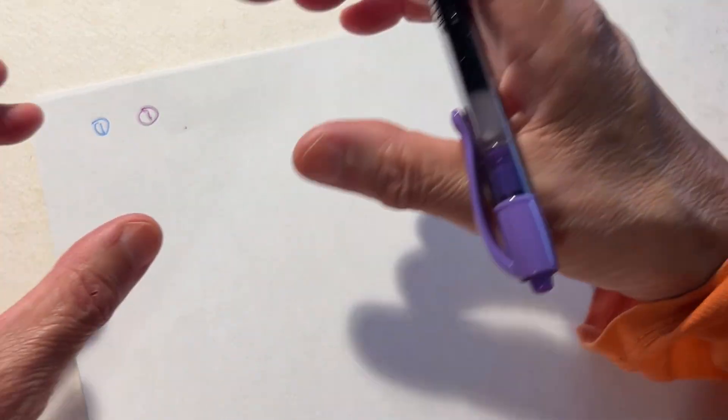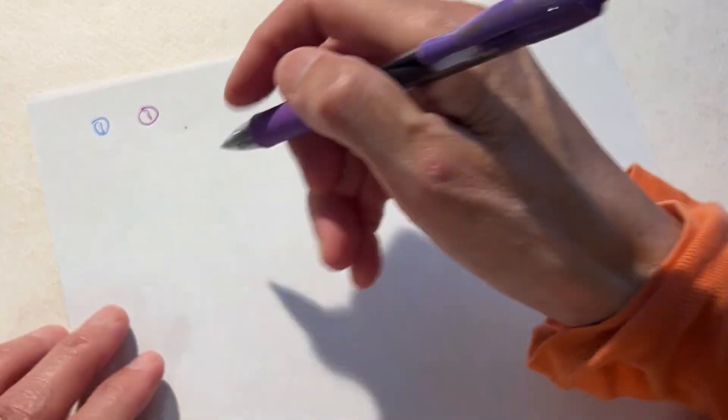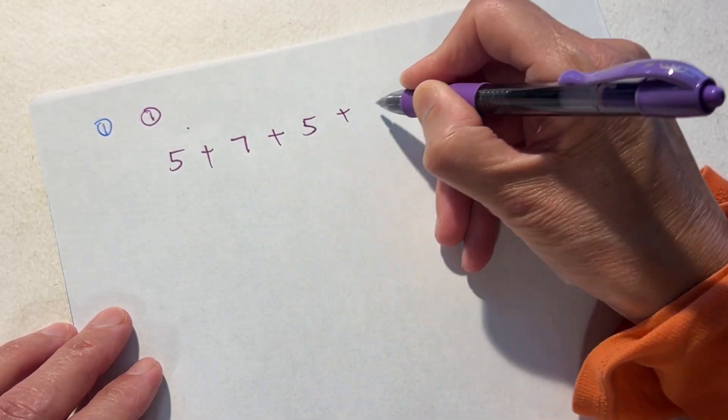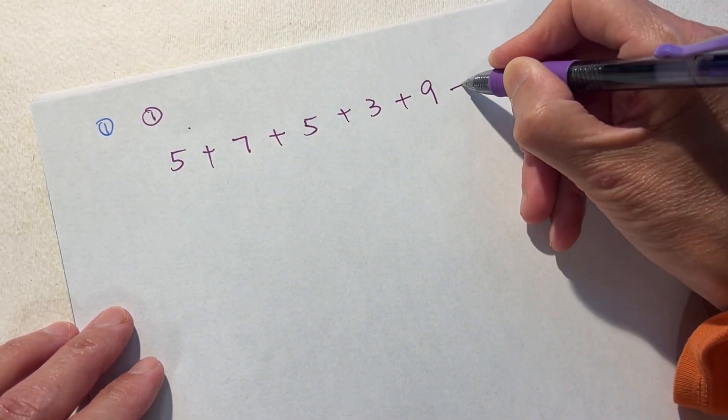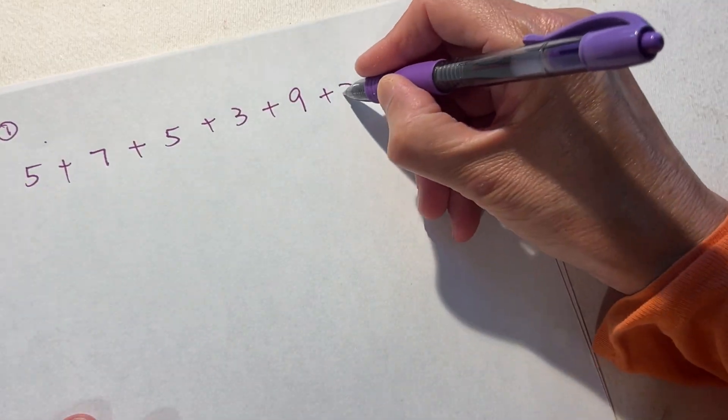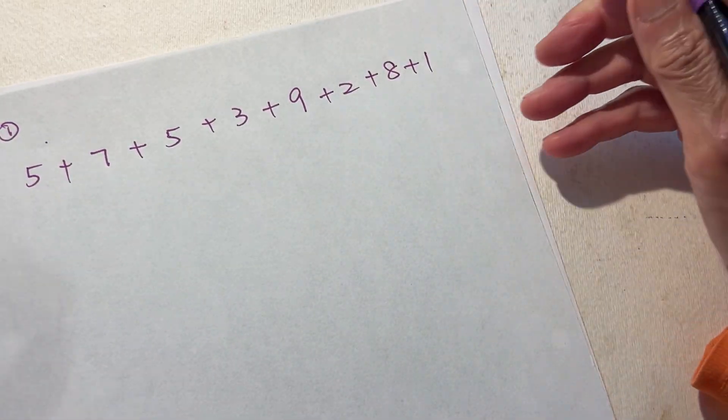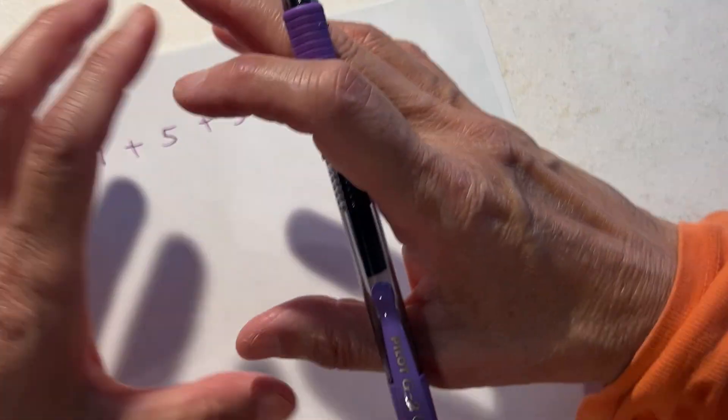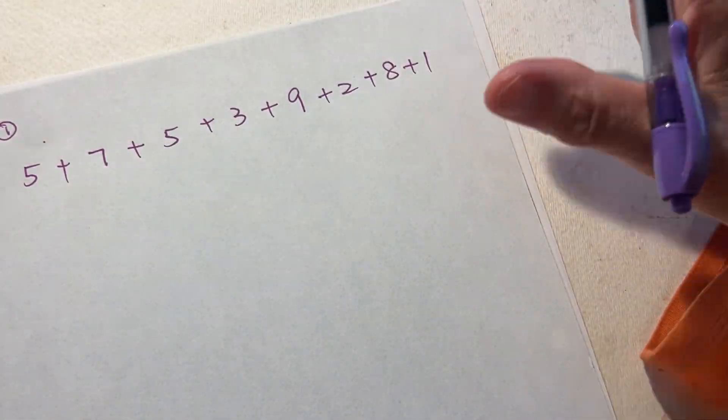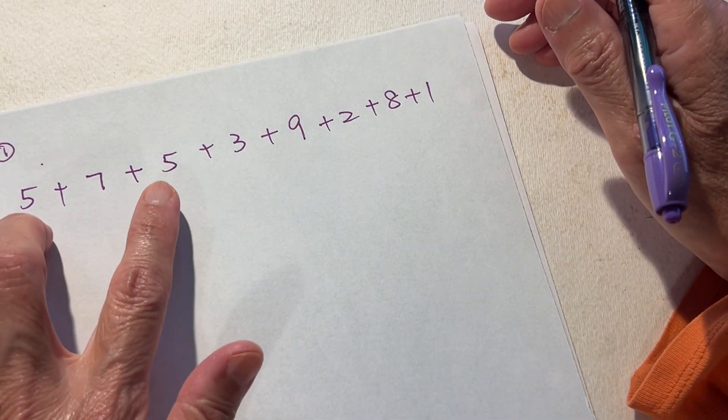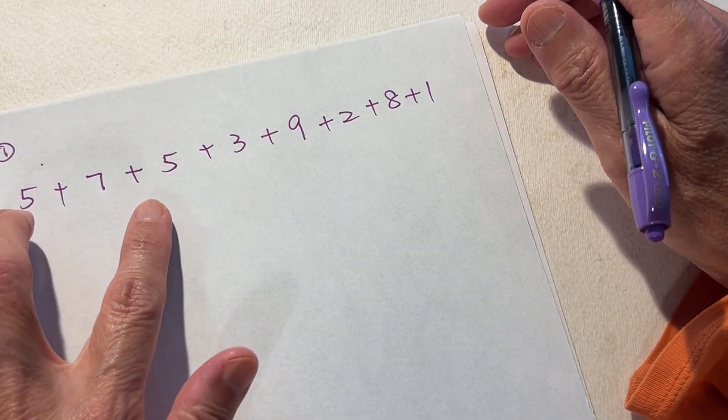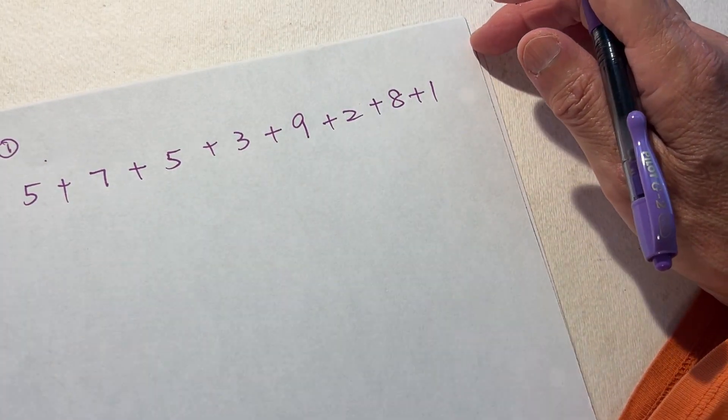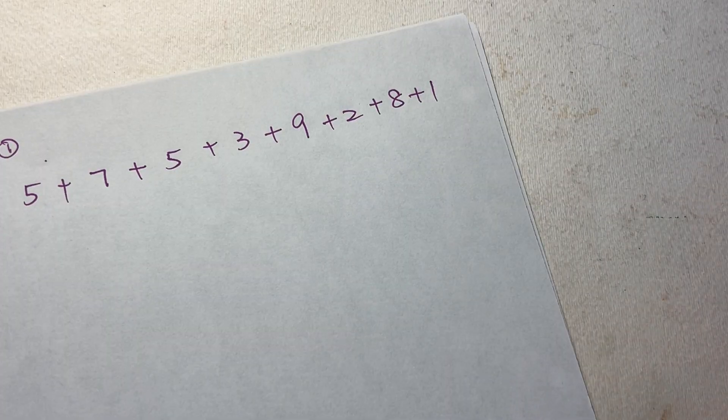The result is just adding - you can add 5+7+5+3+9+2+8+1. You can add them together, or at the end of the day you just add them together, but you can choose some numbers, you can switch the order because they are the same operation or adding or addition.